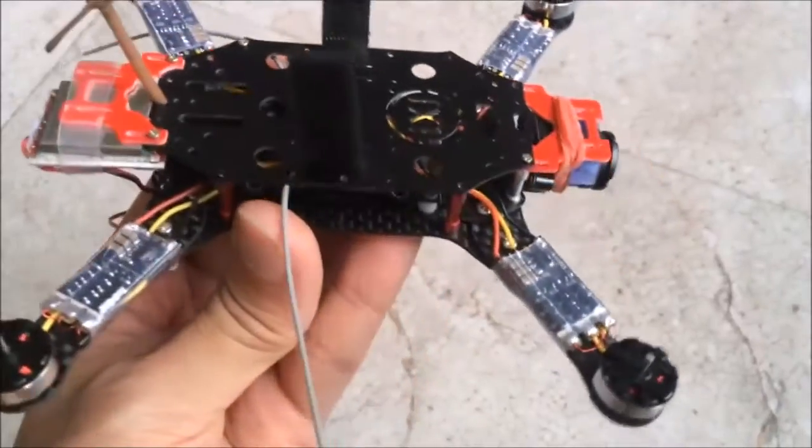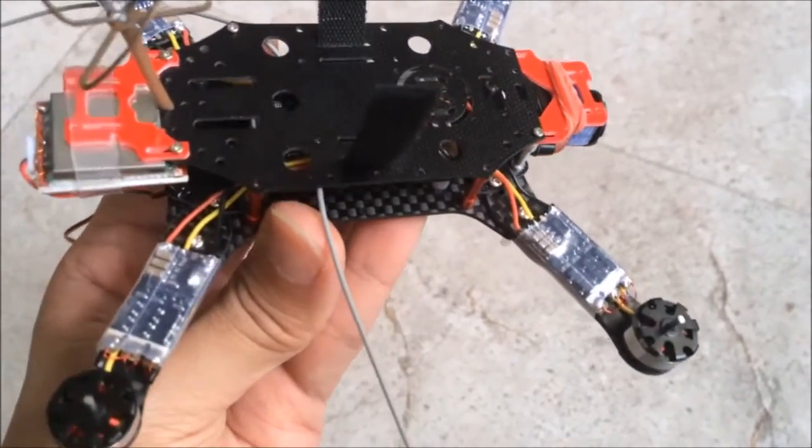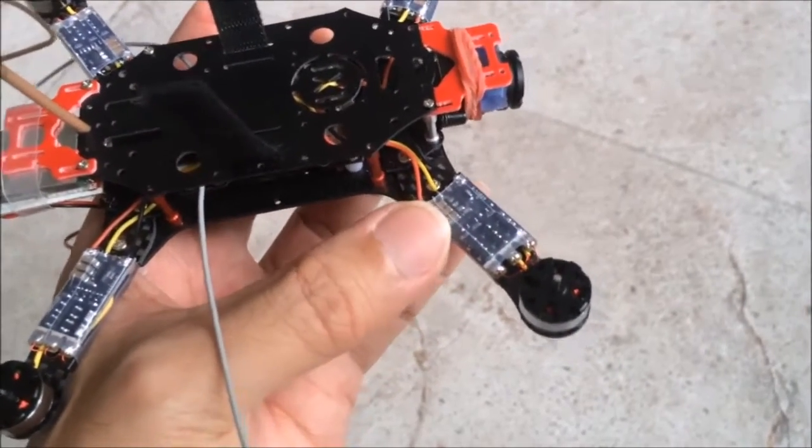As you can see here, and because the carbon frame is conductive, it's a good idea to just take on a piece of black tape on the surface before you mount your ESC.